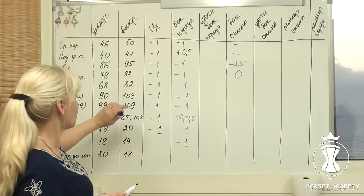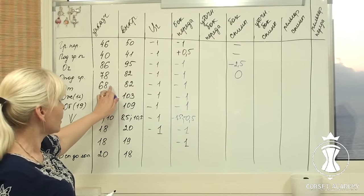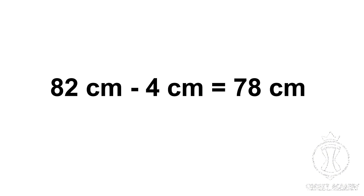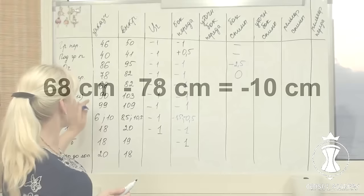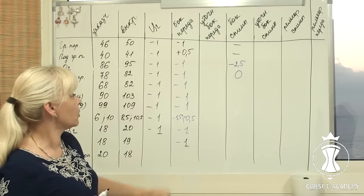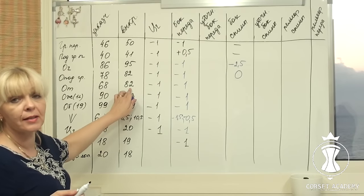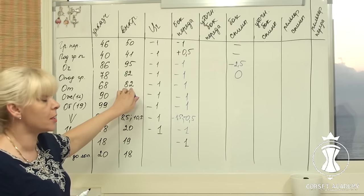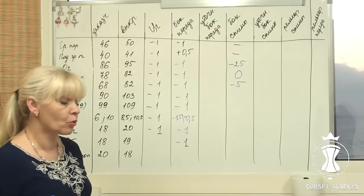Waist circumference. My client's measurement is 68 cm and it is 82 cm on the pattern. 82 cm minus 4 cm equals 78 cm. 68 cm minus 78 cm equals negative 10 cm. There is an excess of 10 cm on the pattern and I need to distribute it between the left and the right side of the back. In other words, I need to shift either side of the back 5 cm inwards at the waistline level. I write negative 5 cm in the table.